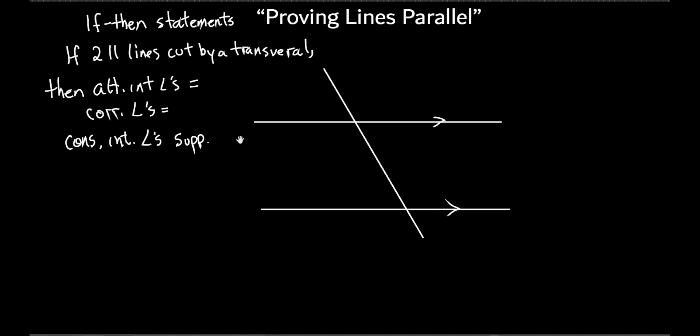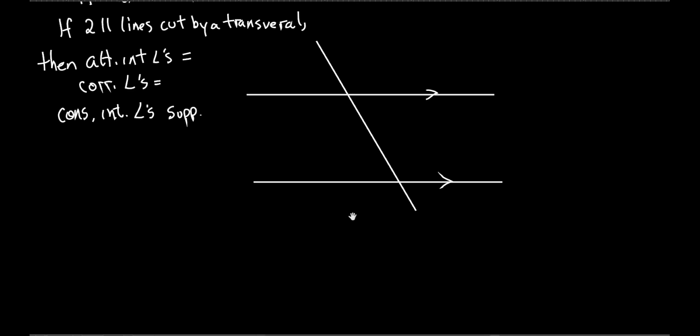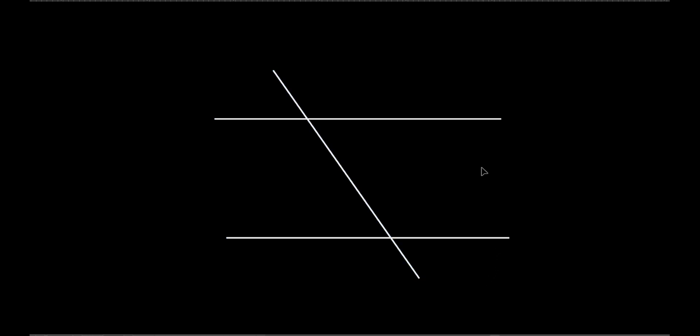What we're going to do today is switch - we're going to kind of switch the if and the then around. So instead of saying if the two lines are parallel then all this stuff is true, what we're going to do is say: what if the alternate interior angles were already equal to each other? Then what kind of lines are those two lines going to be? They're going to be parallel.